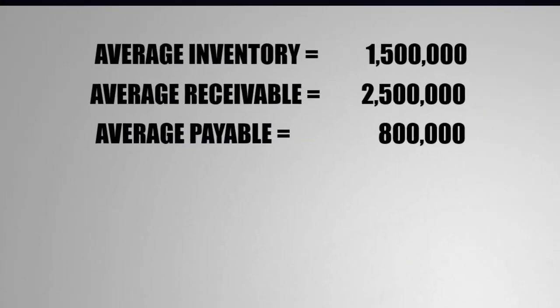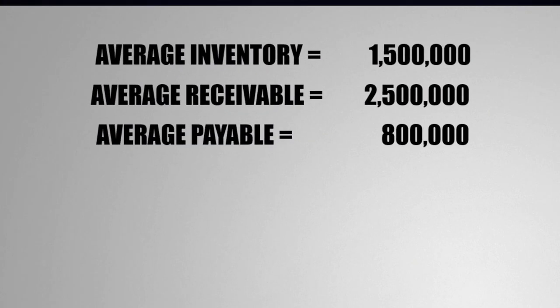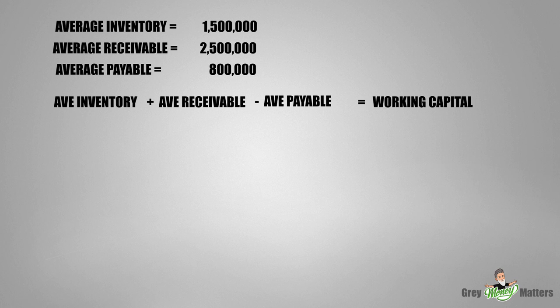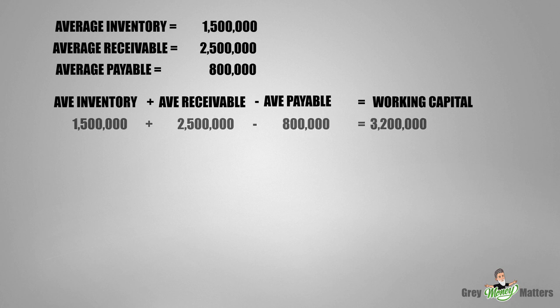the required funds necessary to continue with the day-to-day operations within your business. As you can see in this example, average inventory of 1.5 million — taken from the first example's numerator in the inventory days calculation — followed by average receivable of 2.5 million and average payable of 800,000. Using the same concept as the cash conversion cycle calculation, average inventory plus average receivable less average payables equals working capital in dollar value. Plugging in the numbers: 1.5 million plus 2.5 million less 800,000 equals 3.2 million dollars in working capital funds locked away for a period of 71 days.